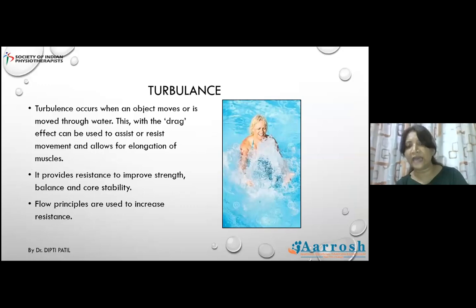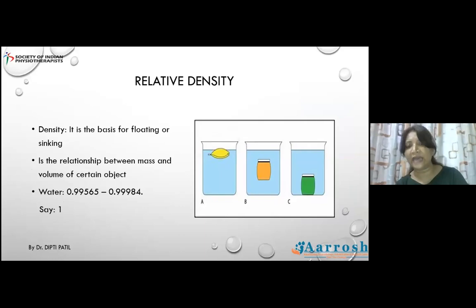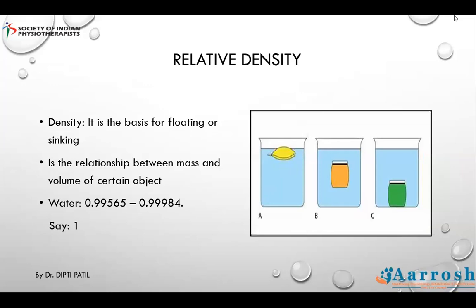Turbulence provides resistance to improve strength, balance, and postural stability. Flow principles are also used to increase resistance and balance. Relative density is the basis for floating or sinking — water has a relative density of approximately one. Persons with density greater than one sink easily. Hypertonic children and the geriatric population, who have more adipose tissue, float easily, whereas adolescents to middle-aged individuals with denser body structures tend to sink.